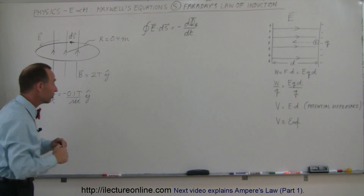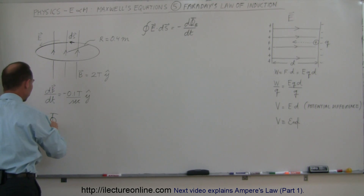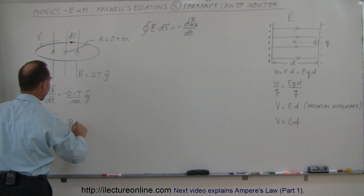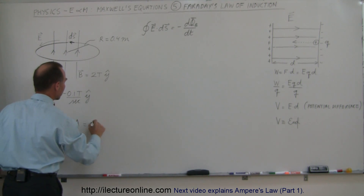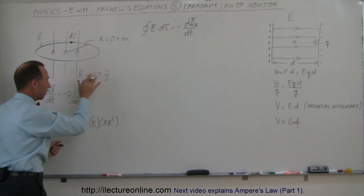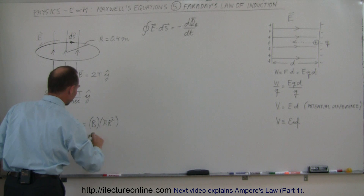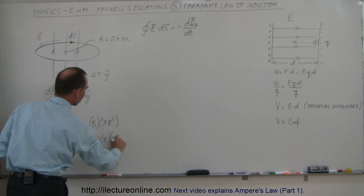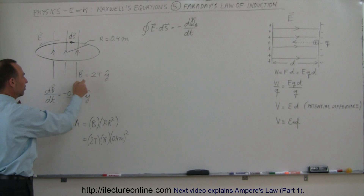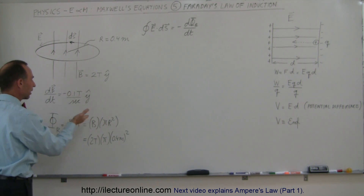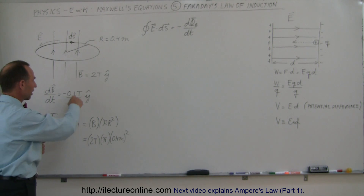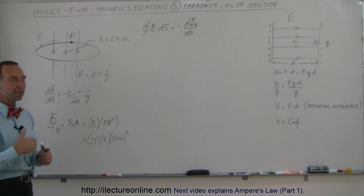The magnetic flux in this case equals the magnetic field strength B times the area of the loop A, which is B times pi times the radius squared. With our given values, that would be 2 Teslas times pi times 0.4 meters squared. As the magnetic field strength decreases by 0.1 Teslas per second, the flux decreases in the same ratio — about 1/20th, or 5% per second.